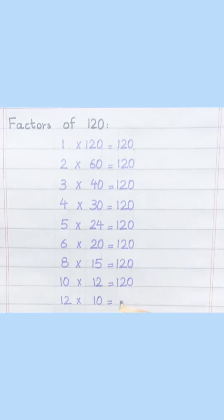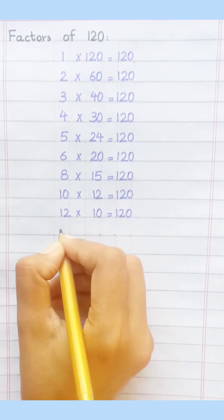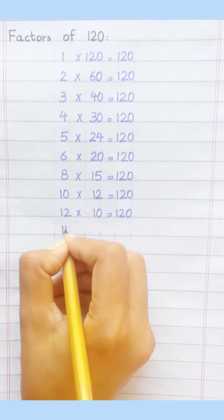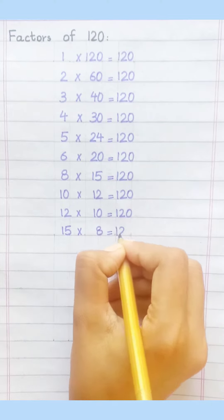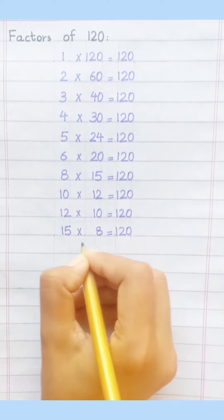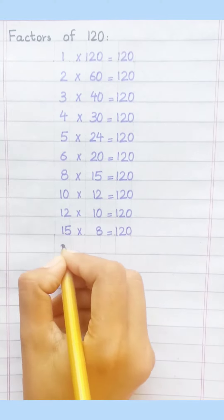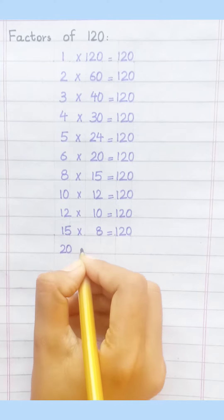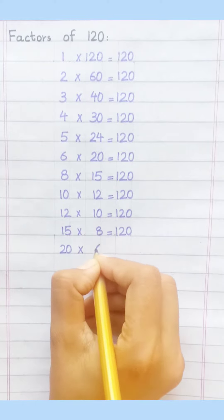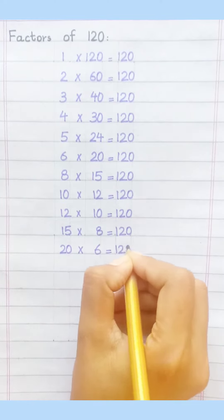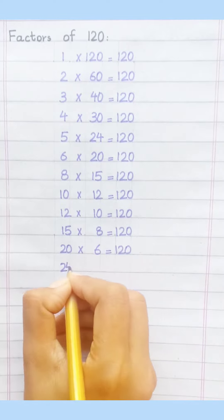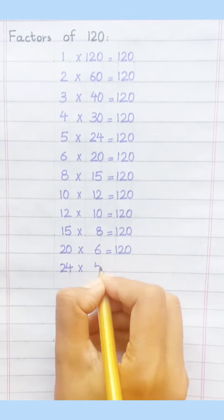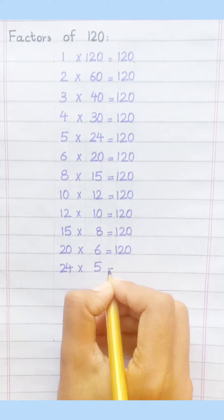Twelve 10s are 120. Fifteen eights are 120. Twenty sixes are 120. Twenty-four fives are 120.